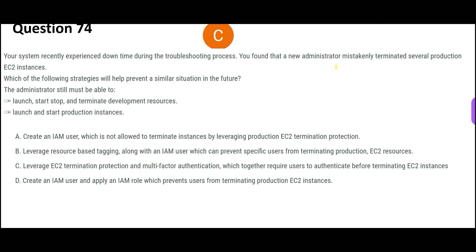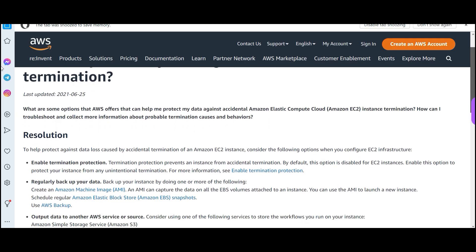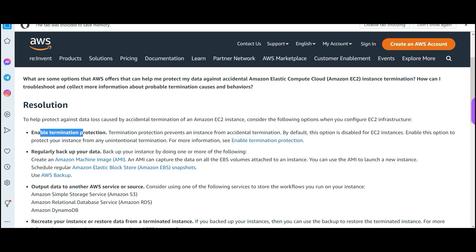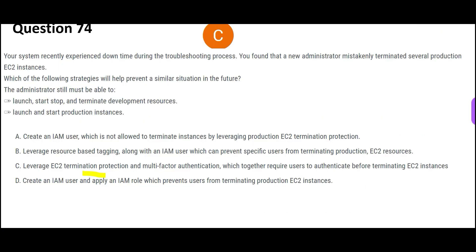Now let us look at the next question. The problem is very clear - accidentally nobody should be able to terminate instances. How do you do that? You have a termination protection. This is a good article on how you can use termination protection. Regular backup of data to avoid accidental instance termination, plus we will use MFA. When someone accidentally deletes or terminates, it will ask for a code.